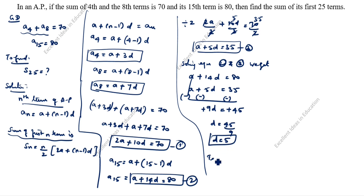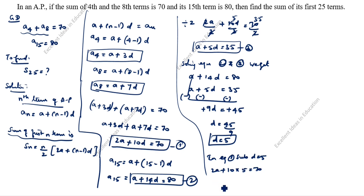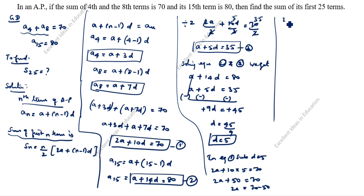Next, we substitute D equals 5 into the first equation. So 2A plus 10 into 5 equals 70, giving 2A plus 50 equals 70. Therefore 2A equals 70 minus 50, which is 20, so A equals 10. We now have D equals 5 and A equals 10.